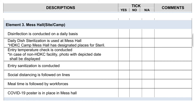Mess hall site slash camp. Disinfection is conducted on a daily basis. Daily dish sterilization is used at mess hall. Camp mess hall has designated places for sterile. Entry temperature check is conducted. In case of non-HDKC facility, photo with depicted date shall be displayed. Entry sanitization is conducted. Social distancing is followed on lines. Meal time is followed by workforces. COVID-19 poster is in place in mess hall.